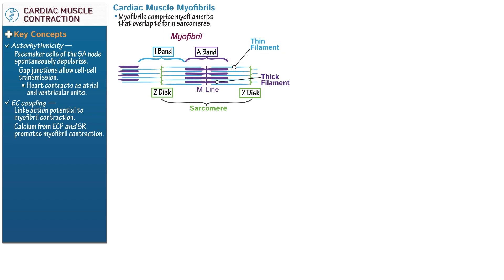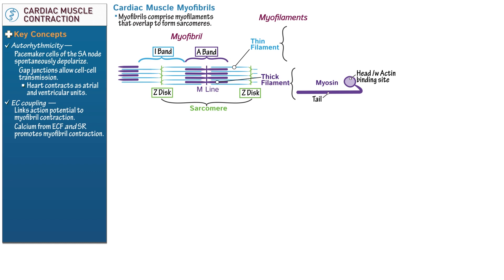As in skeletal muscle, cardiac muscle contraction requires binding of the thin and thick filaments and cross-bridge cycling to shorten the sarcomere and create muscle tension. So let's review the basics of the thin and thick filaments. Start with the thick filament, which features the protein myosin. Label the head with the actin binding site and the tail. During contraction, the myosin heads bind with actin to form cross-bridges.